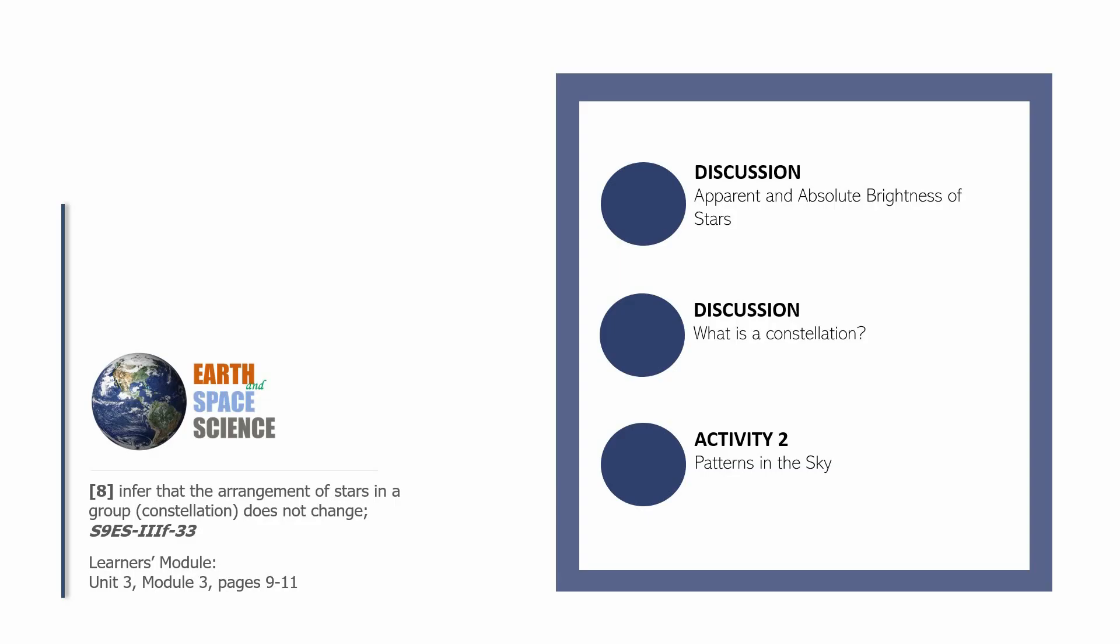Hello, and welcome to the Knowledge Catalog's Earth and Space Science 9's 13th episode. This episode is comprised of the following parts. The first part is a discussion on the apparent and absolute brightness of stars. The second part is another discussion about what is a constellation. And the last part is an activity, Activity number two, Patterns in the Sky.